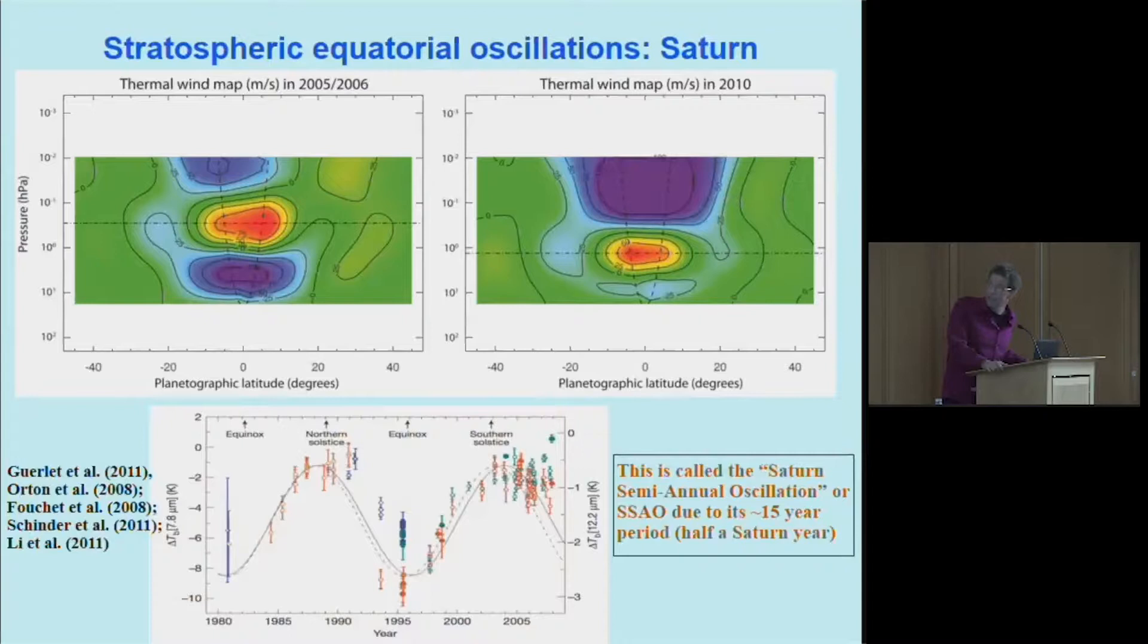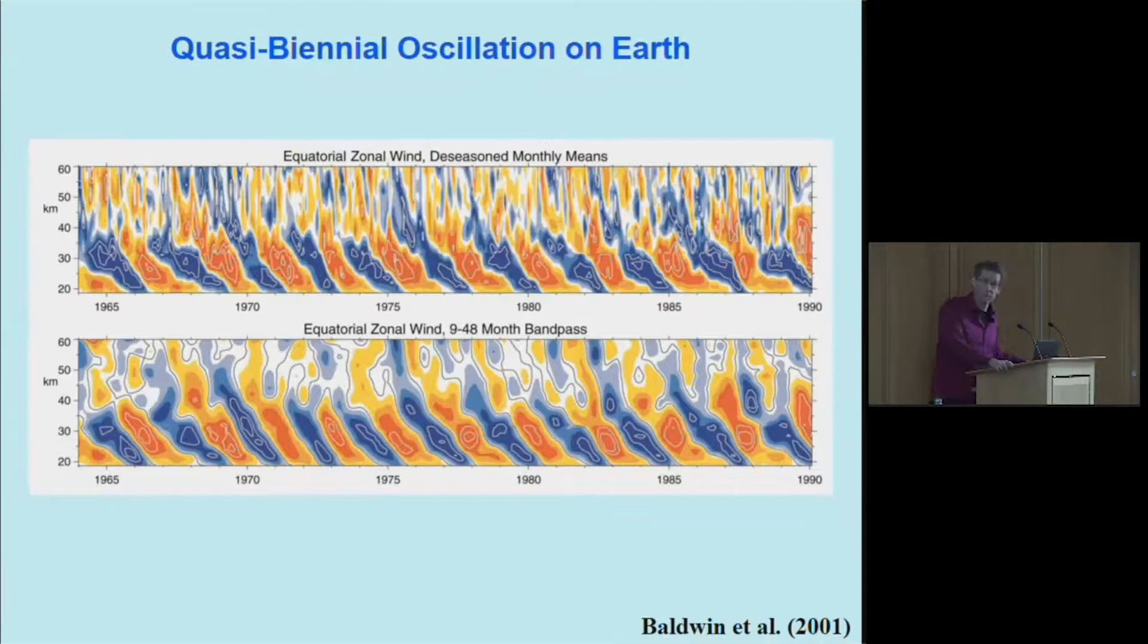For Saturn this is called the semi-annual oscillation or SAO due to the fact that it's half of the Saturn year in length. It turns out there's an oscillation just like this on the Earth's atmosphere which is well known and been studied for half a century, called the quasi-biannual oscillation or QBO. This shows basically the east and westward wind speeds at the equator over time from the '60s through about 1990.